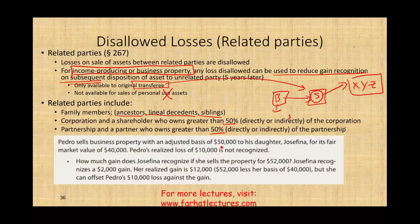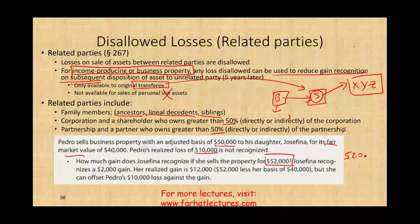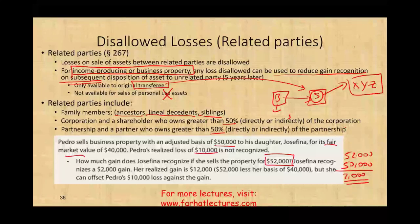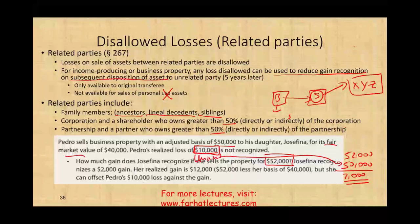Pedro sells a business property with an adjusted basis of $50,000 to his daughter Josefina for its fair market value of $40,000. Pedro's realized loss of $10,000 is not recognized because they are related parties. Now, if Josefina sells the property for $52,000, her realized gain is $12,000 — that's $52,000 less her basis of $40,000. But she can offset Pedro's unused $10,000 loss against the gain, so her recognized gain is reduced. This is the subsequent disposition rule in action.